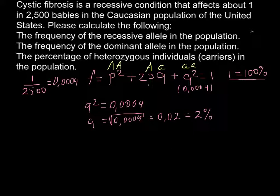So we answered the first question: 2%. Now we have to find the answer for the second question, the frequency of the dominant allele in the population. This is very easy because we have two alleles in the population, so p + q. If we combine them all together, we should get 1. So if we know q, then 1 - q = p.